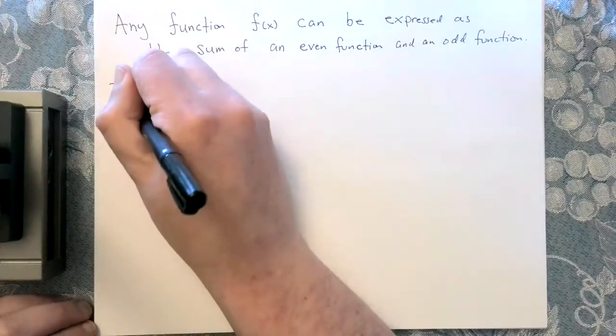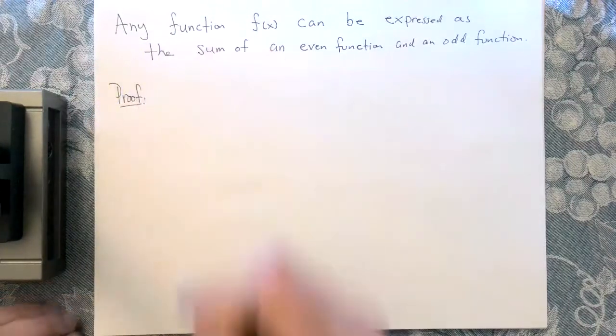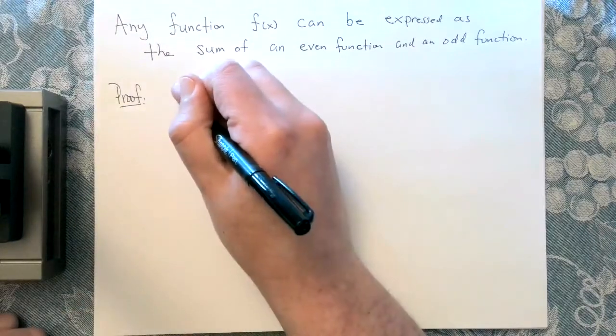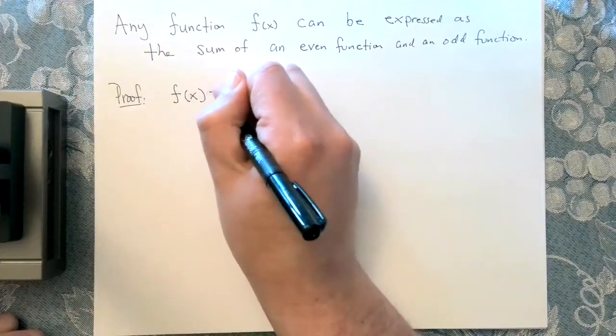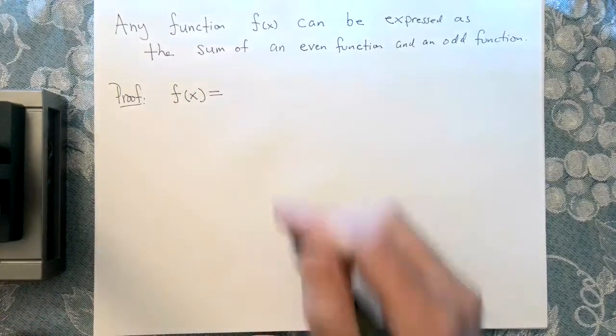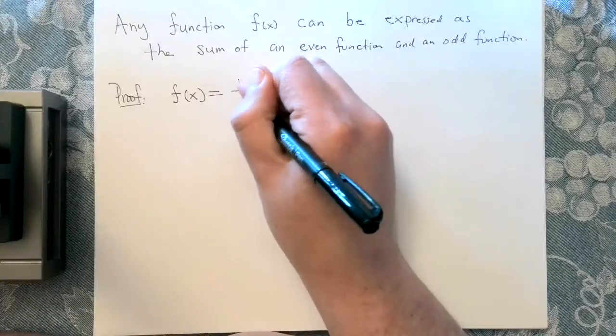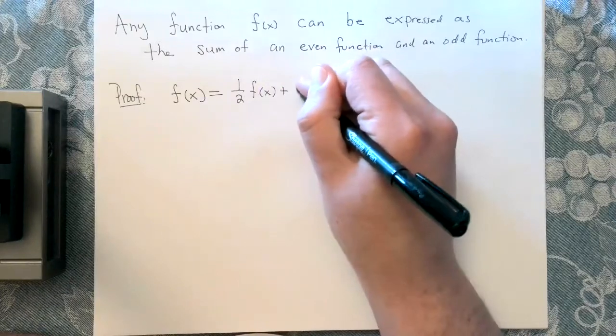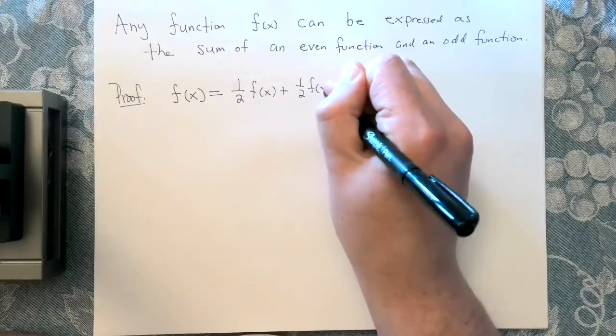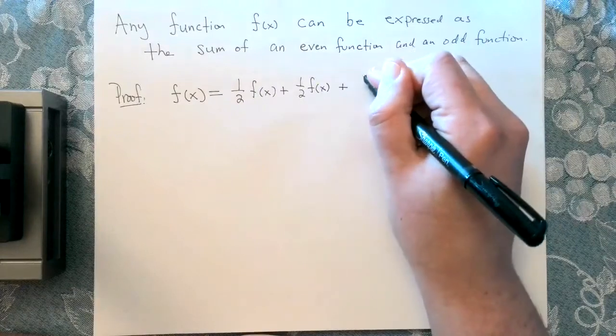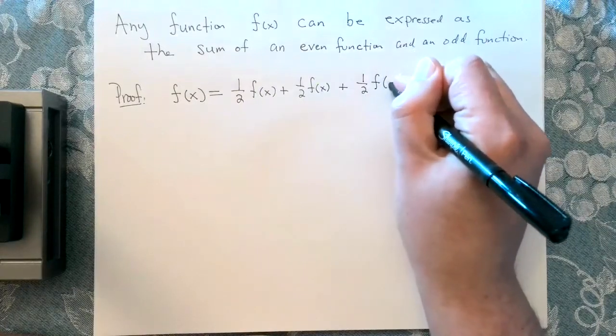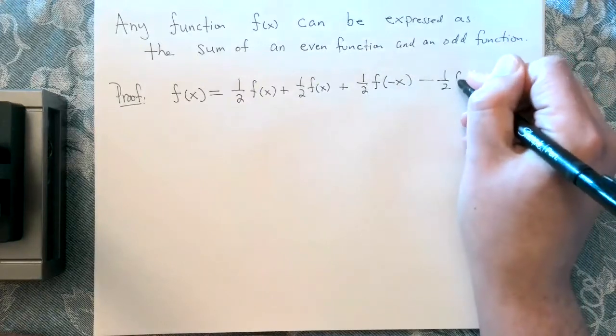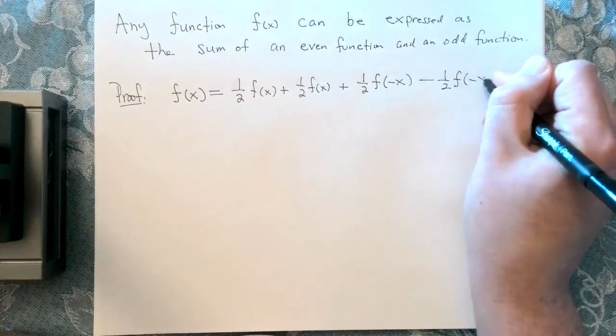So here's the justification. The idea is to take f(x) and write it in the following way: one half f(x) plus one half f(x) plus one half f(-x) minus one half f(-x).